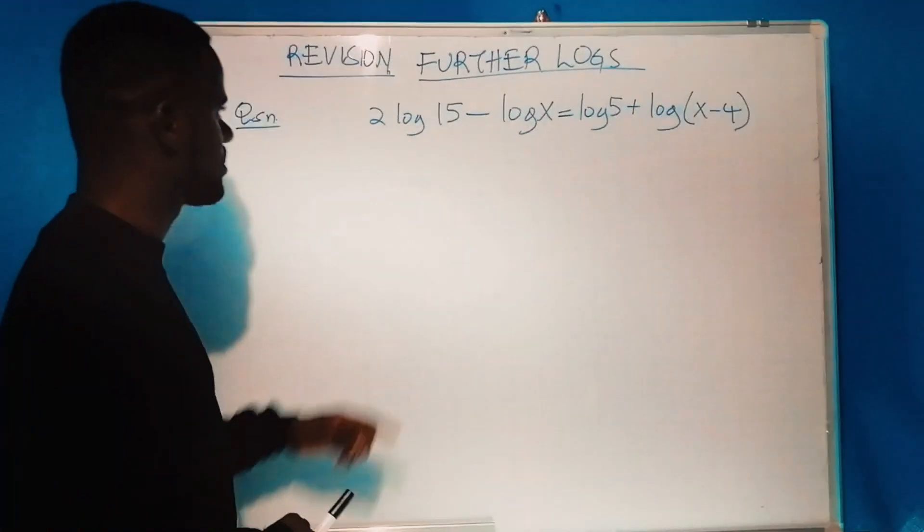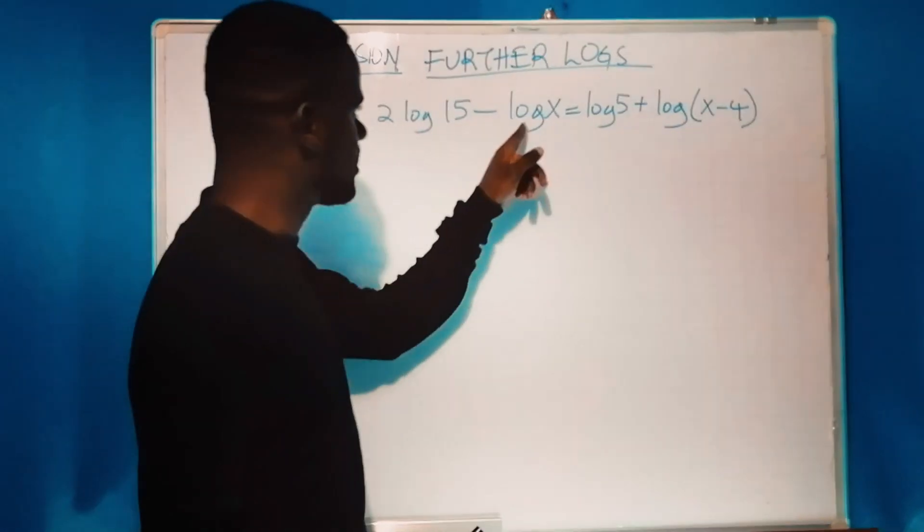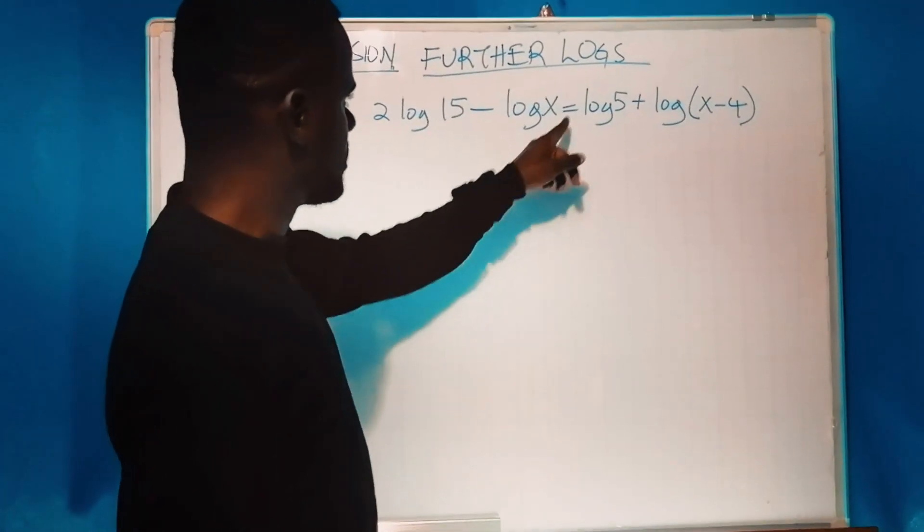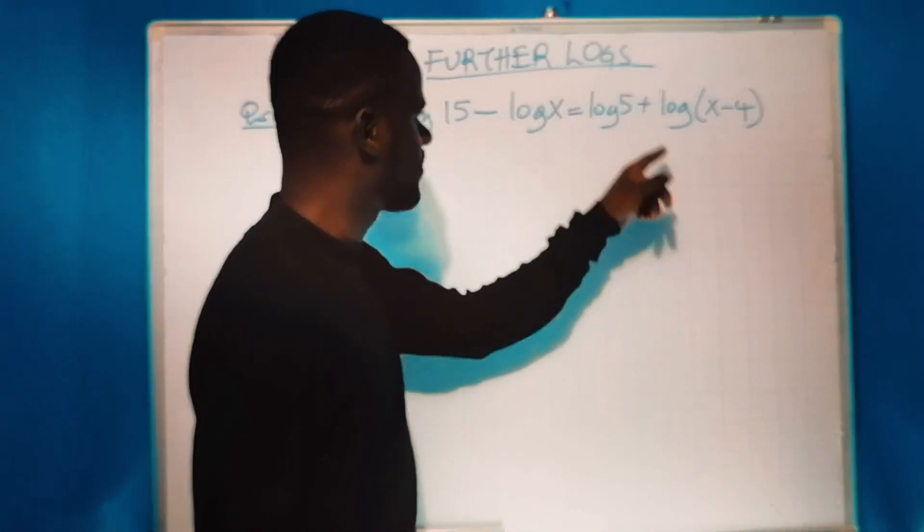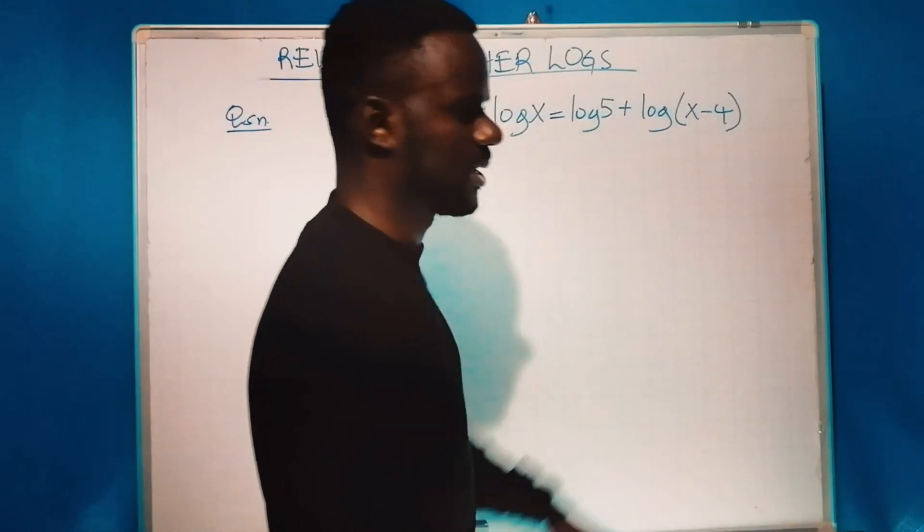The question is: 2 log 15 minus log x equals log 5 plus log(x - 4).